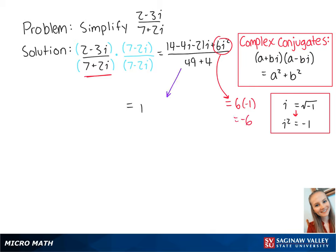So now we have 14 minus 25i minus 6 all over 53, which becomes 8 minus 25i over 53. To put this in the form a plus bi,